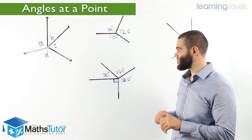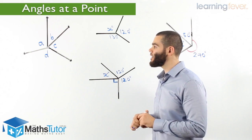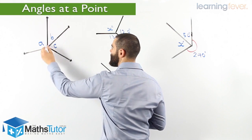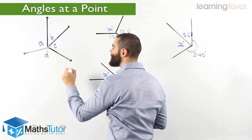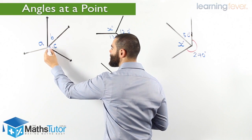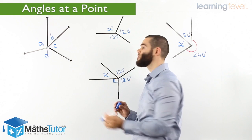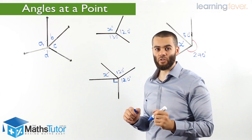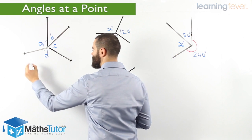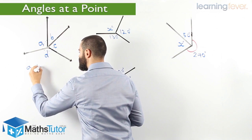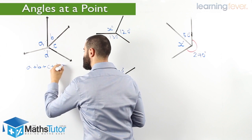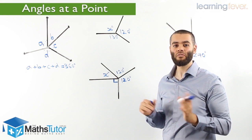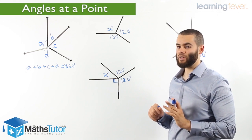Let's see how it actually works. In this scenario here, we have a diagram and we have the angles: angle A, B, C and D. As you can see, angle A, B, C and D all together meet at a central point. That's why we call it angles at a point, and they all add up to 360 degrees. They make a full turn, 360 degrees, meaning A plus B plus C plus D equals 360 degrees.